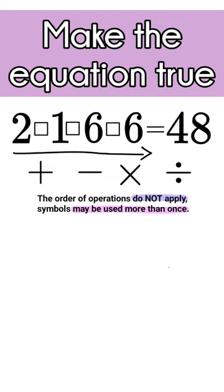Now let's get started. So now here our largest numbers are 6 and 6. And as everyone may know, 6 times 6 equals 36. And the difference between 36 and 48 is 12.